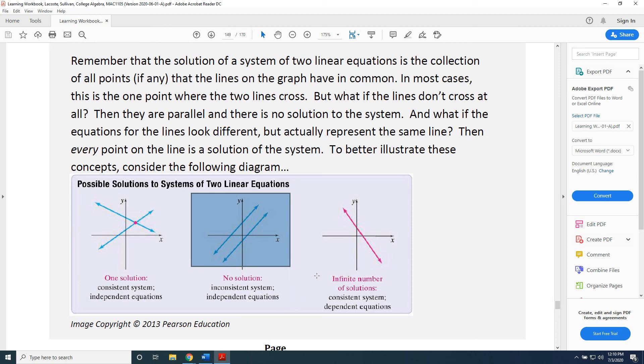And if you determine that you're dealing with an infinite number of solutions, which is a consistent system with dependent equations, then when you graph both lines, you find that one is sitting directly on top of the other. And therefore, they have all points in common. There are an infinite number of points in common to both lines.